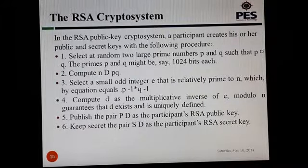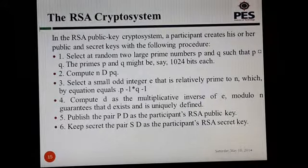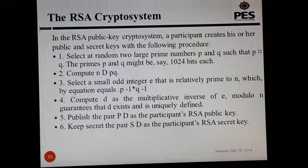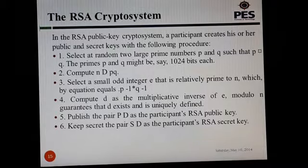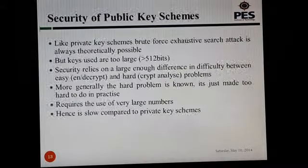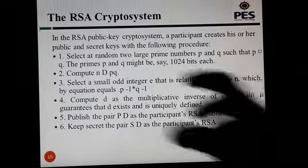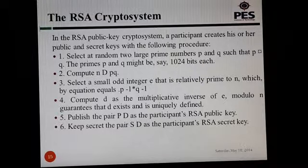Then compute d as the multiplicative inverse of e modulo phi(n). This guarantees that d exists and is uniquely defined. The value of d is computed using the extended Euclidean algorithm. Then publish the pair (e, n) as the participant's RSA public key, and keep the secret key (d, p, q) as the participant's RSA private key.